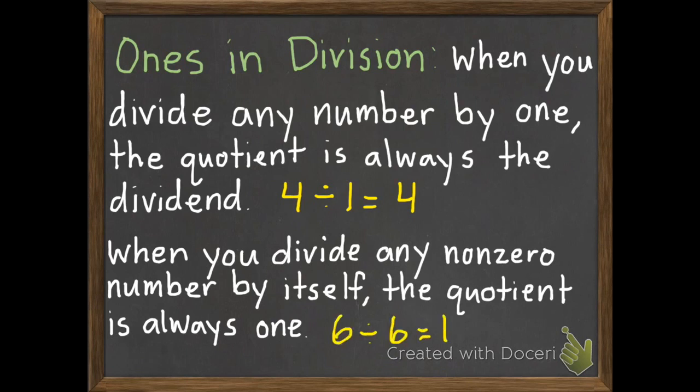So if we have 6 divided by 6, it equals 1. So dividing any number by itself — besides 0 — the quotient is 1. If we have 6 things divided between 6 people, they all get 1 of them.